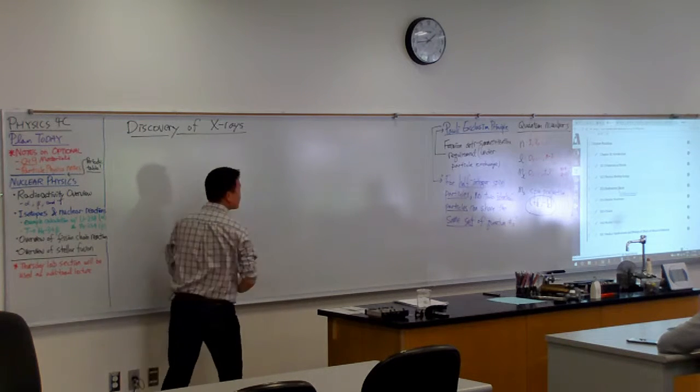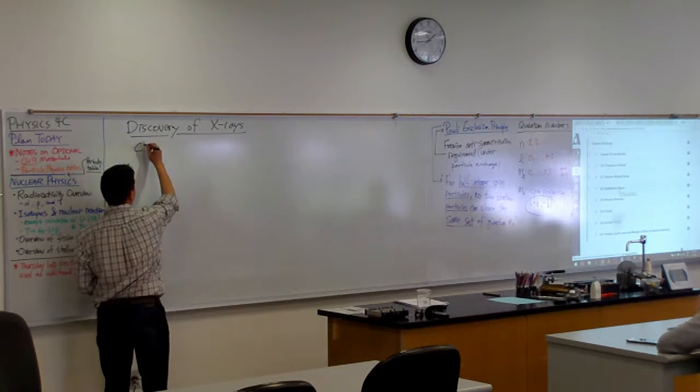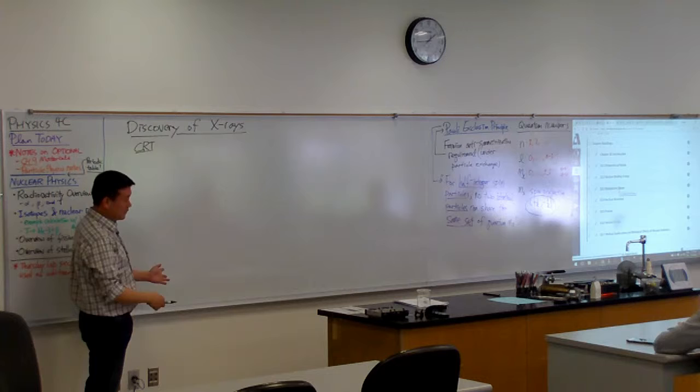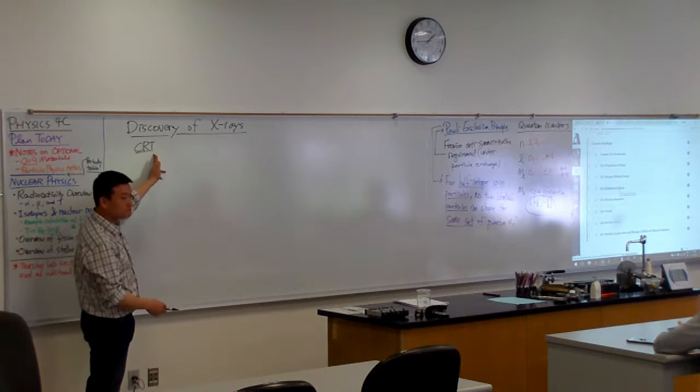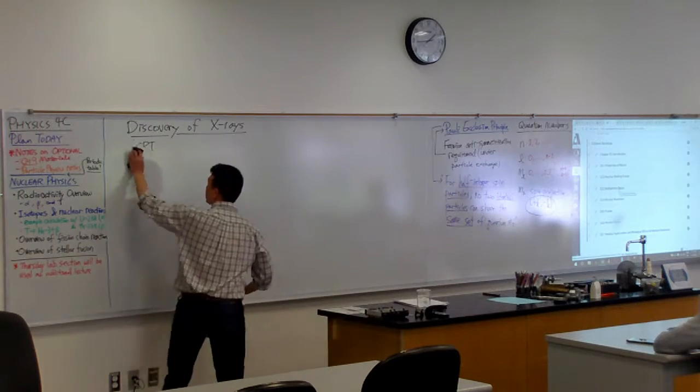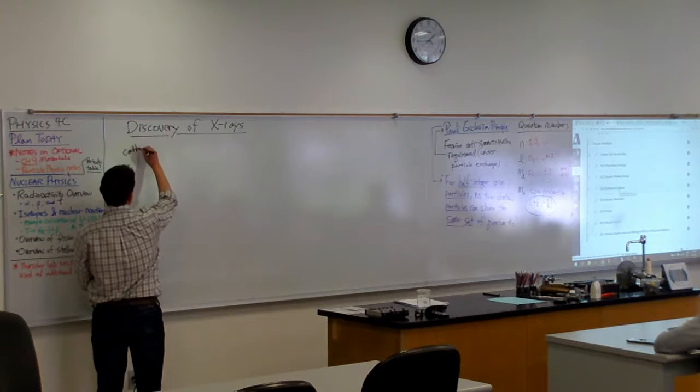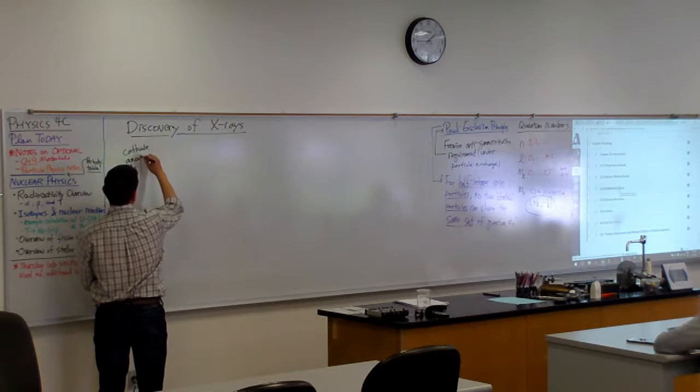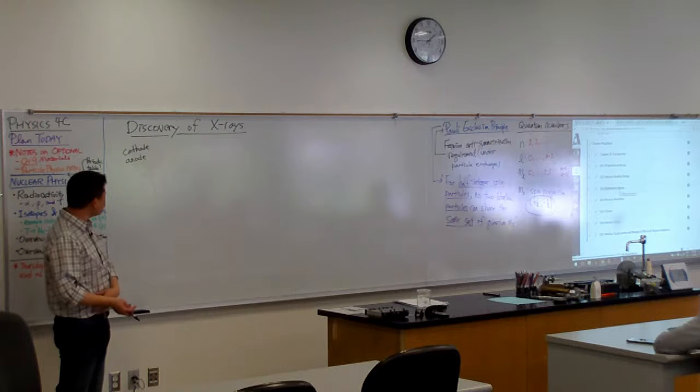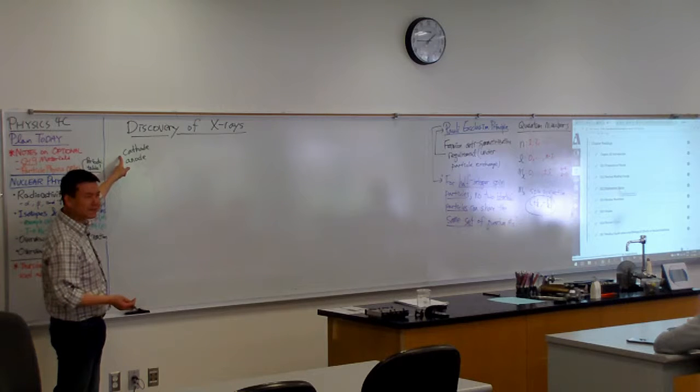There's a device called a cathode ray tube. How many have heard of something called CRT? That's how people used to make TVs. Those old TVs - this stands for cathode ray tube television or screen. What a cathode ray tube is: you have a cathode in a vacuum tube. Anyone here know the distinction between cathode and anode? Cathode is the one that emits electrons, so it's gotta be negative.